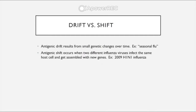To summarize: antigenic drift results from small genetic changes over time, like the seasonal flu. Antigenic shift occurs when two different viruses infect the same host cell and get assembled with new genes. An example was the 2009 H1N1 influenza, which combined hemagglutinin 1 and neuraminidase 1 from two different viruses into one flu virus.